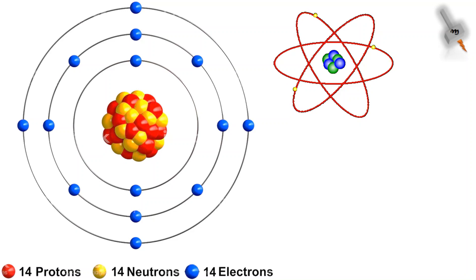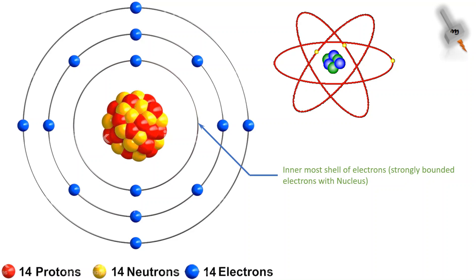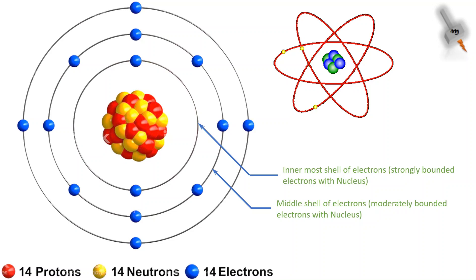The innermost shell of the electrons are very strongly bounded by the nucleus. The middle shell is moderately bounded by the nucleus, and the outer shell of the electrons are loosely bounded by the nucleus.